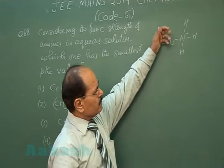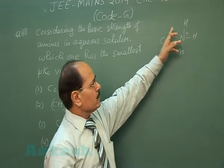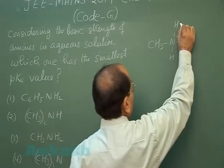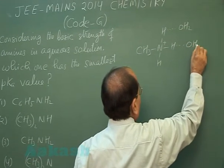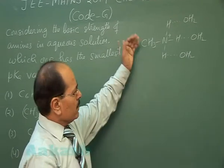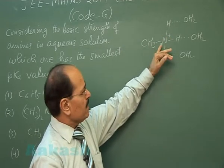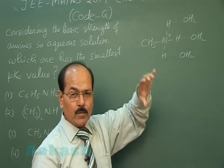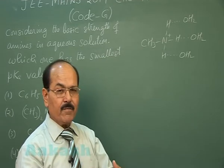Methylamine in aqueous solution will be present as methylammonium ion. The three hydrogen atoms attached to nitrogen will form hydrogen bonds with water molecules. There is only one methyl group, which has a +I effect that increases the electron density of nitrogen, and the three hydrogens show hydrogen bonding with water molecules. So solvation is high but inductive effect is low.